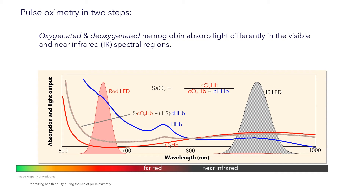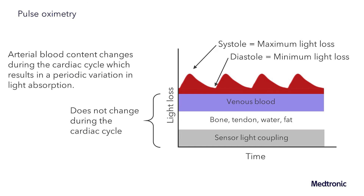Pulse oximetry measures the pulse or plethysmography wave as arterial blood content changes during the cardiac cycle, resulting in periodic variations in light absorption. During systole, as the vessel expands, maximum light loss or absorption occurs, whereas during diastole, as the vessel contracts, minimum light loss or absorption occurs.